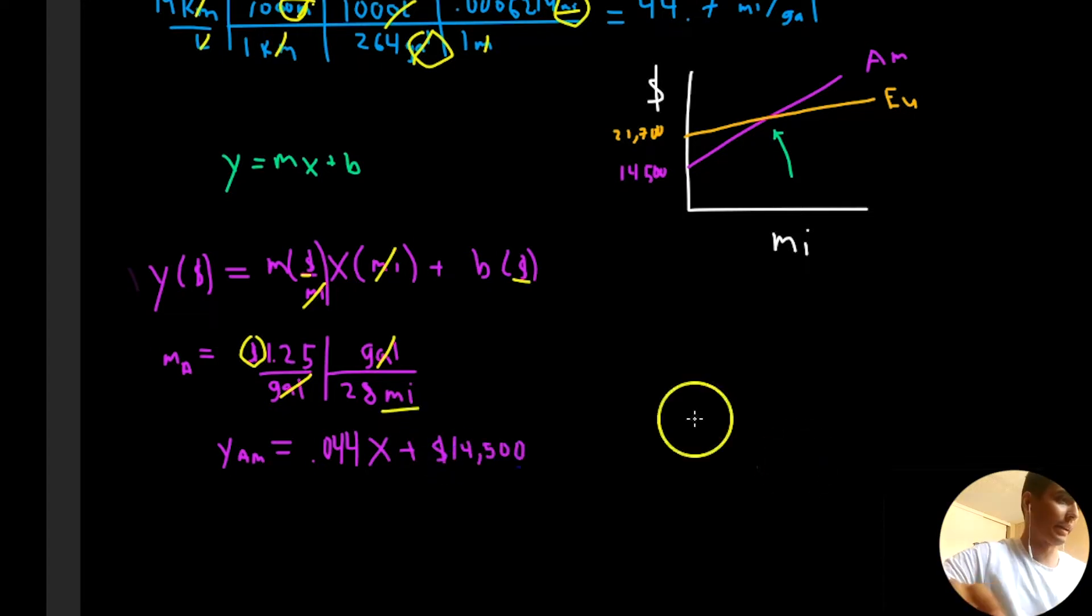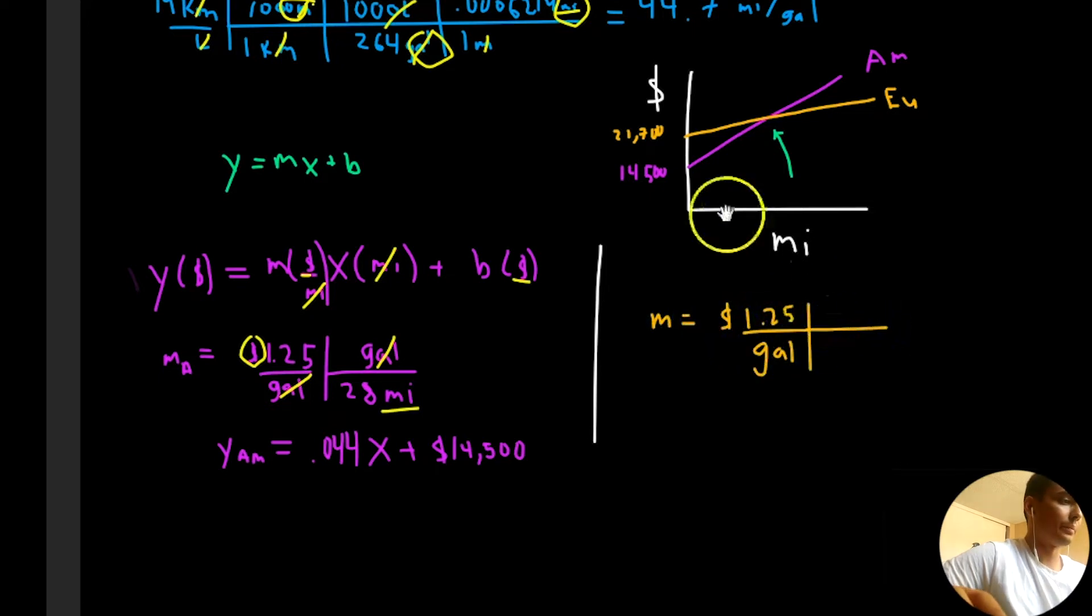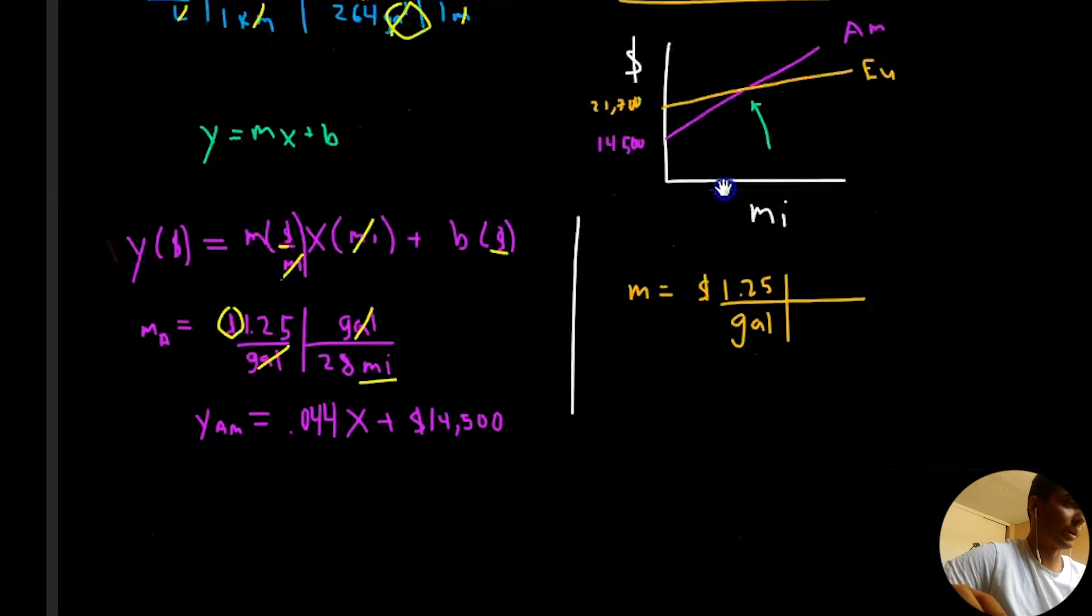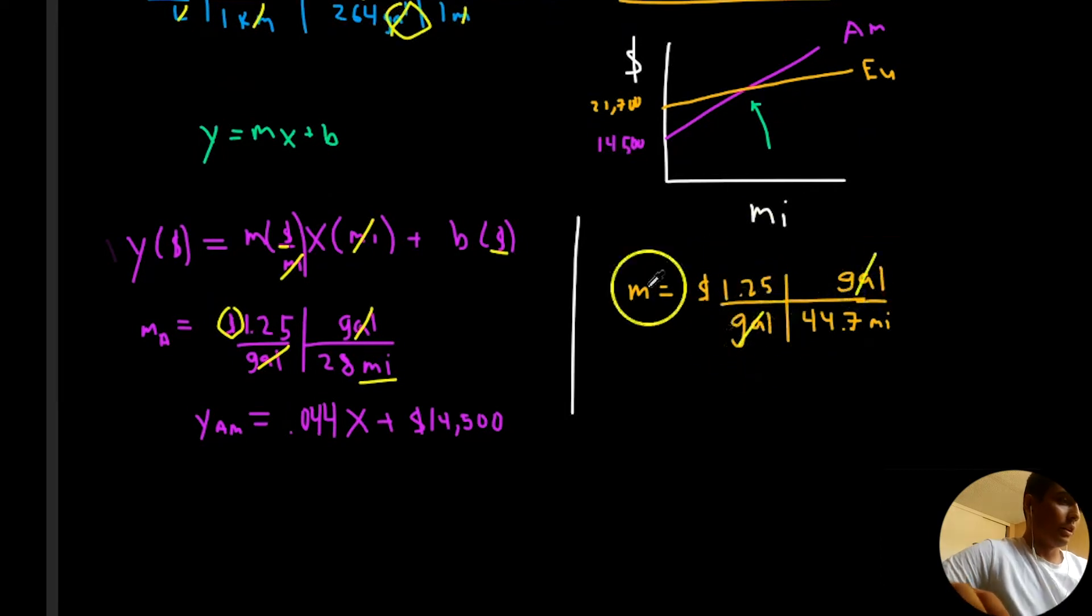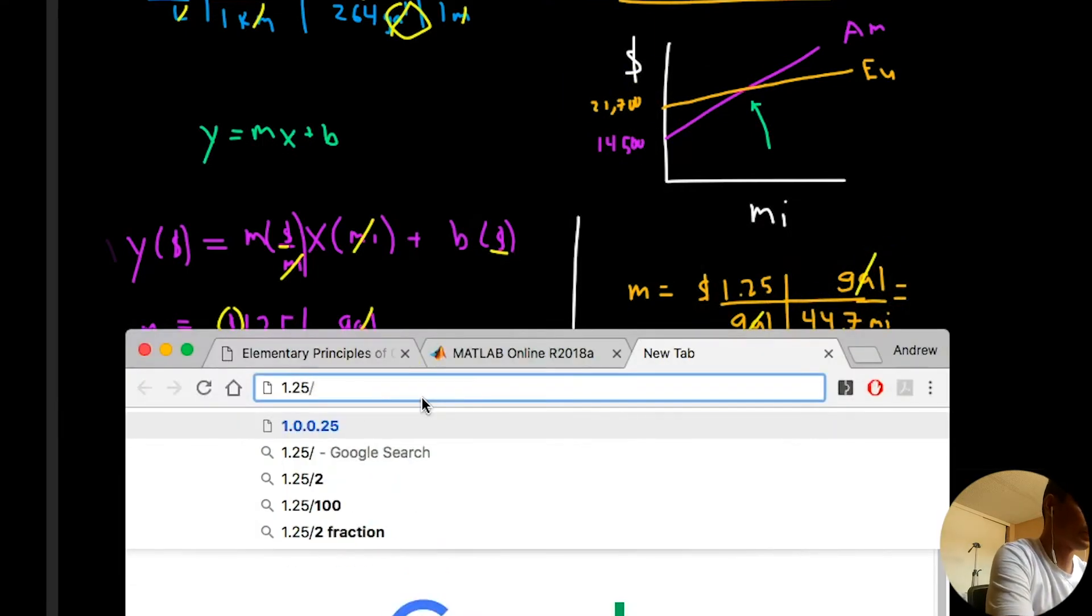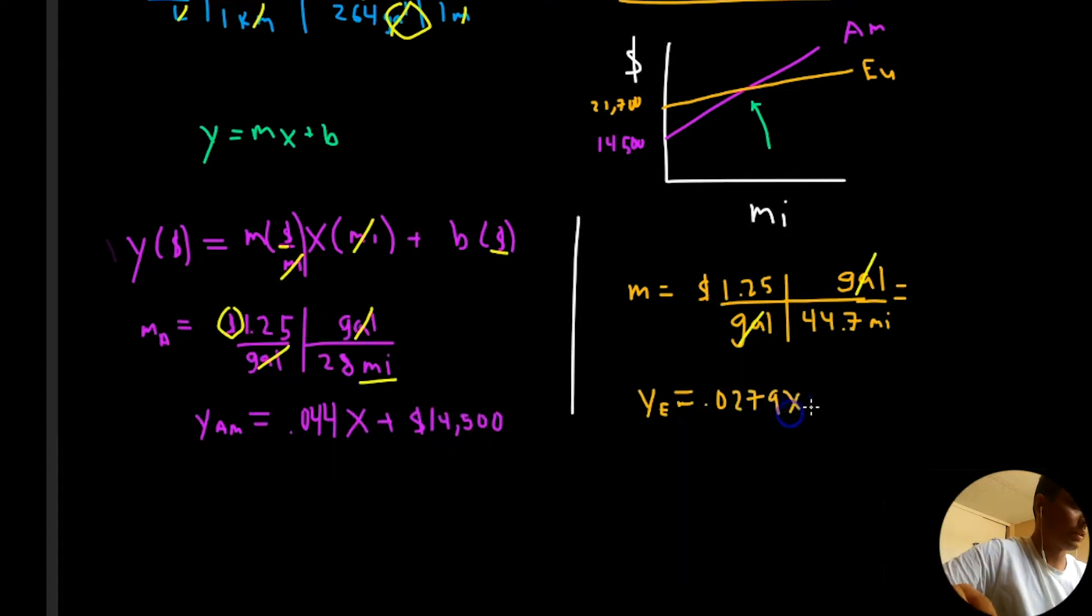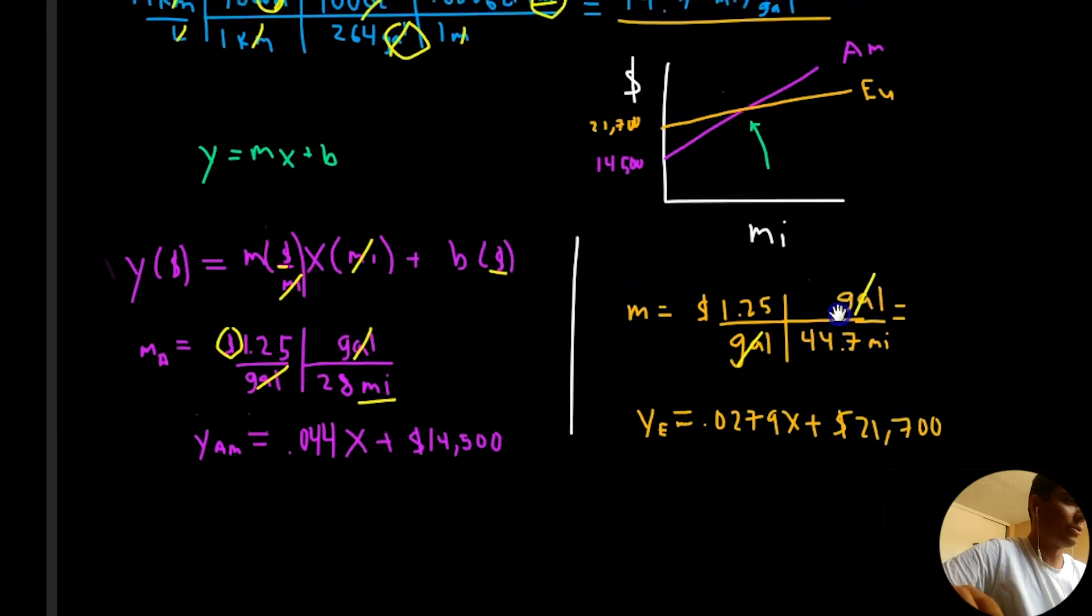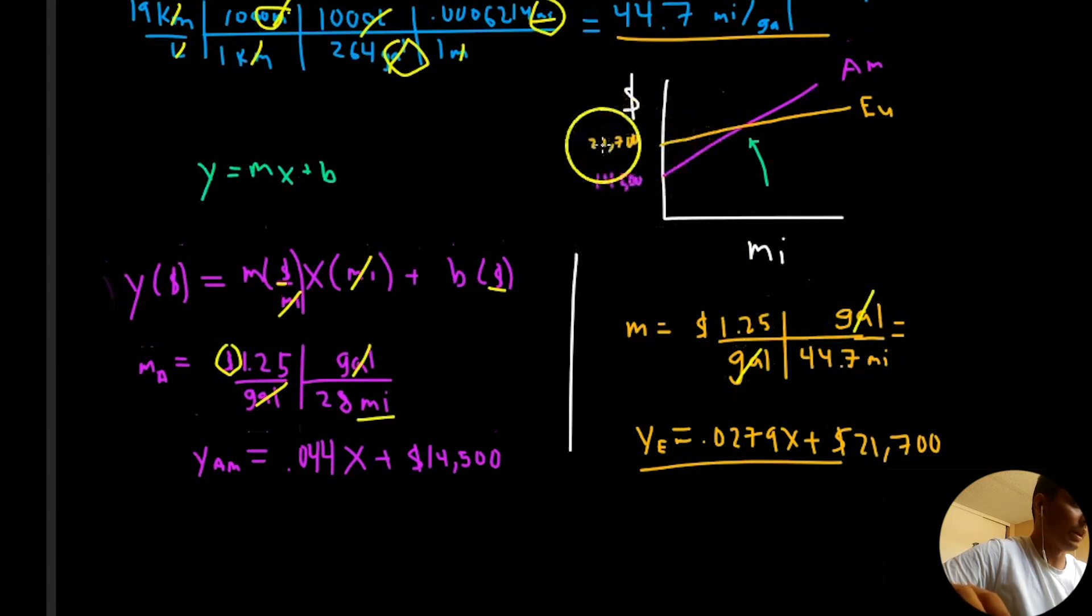Now, let's do the European model. The European car, it's going to be another function. We need this slope. This slope is going to be $1.25 per gallon, price of gas. But this time, the mileage is 44.7 miles per gallon. Therefore, our equation now is y of the European one. This slope is $1.25 divided by 44.7, 0.0279 times x plus $21,700. Which makes sense, because in the European one, the initial cost was higher, but the slope is lower. See how it's 0.02? And this initial cost is lower, but the slope is higher. At some point, we need to identify what mileage x.